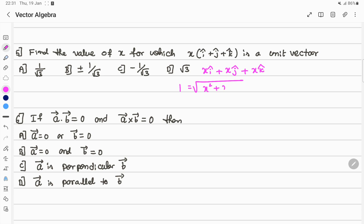X squared plus X squared plus X squared gives 1 equals root of 3X squared. If I shift 3X squared to this side, 3X squared equals 1, then X squared equals 1 by 3. So X equals plus or minus 1 by root 3. Option B is the answer.